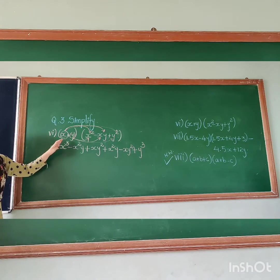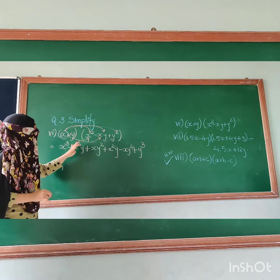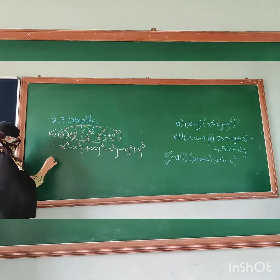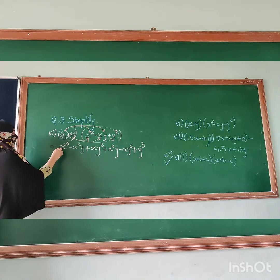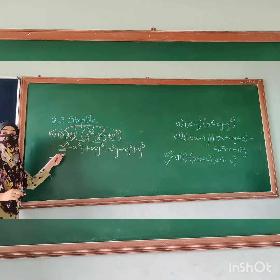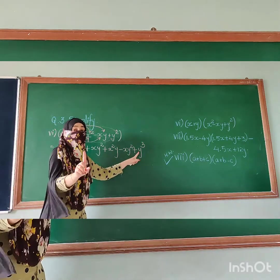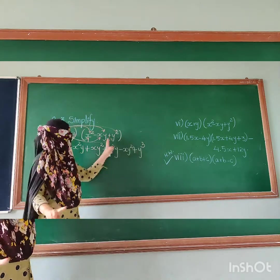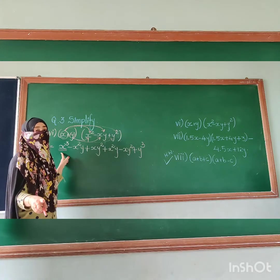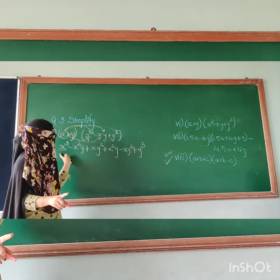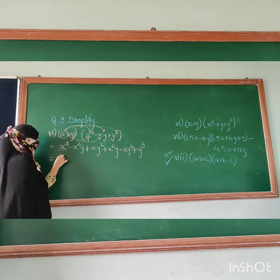Understood up to here? The multiplication is the same — there is nothing new. Now we are going to do the next step: we will find out the like terms. x cubed — do we have a like term of x cubed? No. y cubed is not a like term of x cubed either — the powers are the same but the variables are different. So we will keep x cubed as it is.